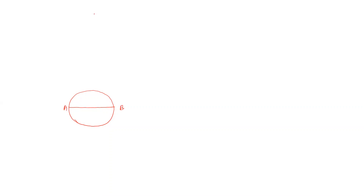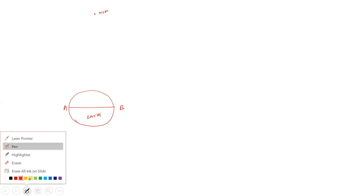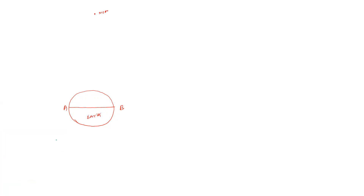If you look at the moon, it is assumed the moon is far from the Earth. We observe the moon from two diametrically opposite points. This is the point taking our line of sight.